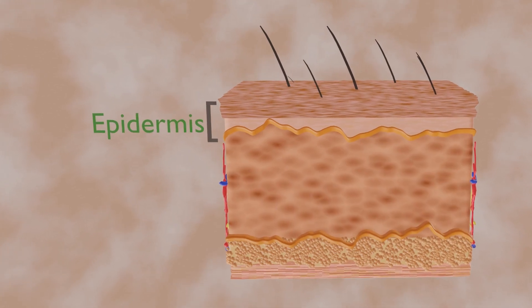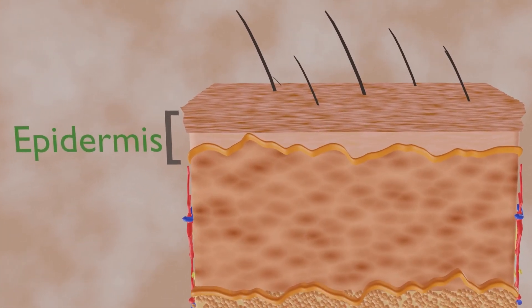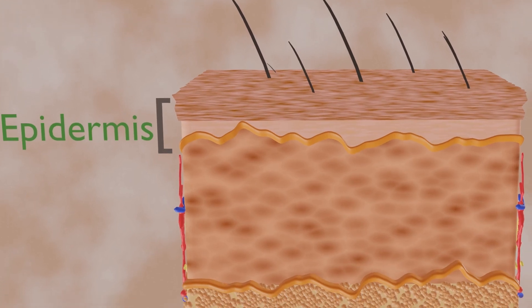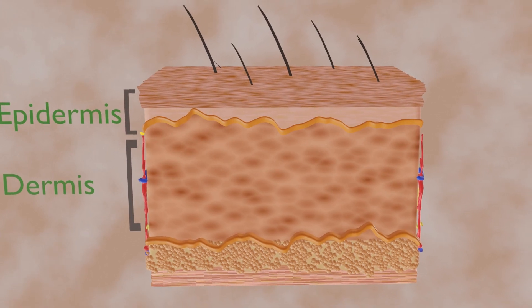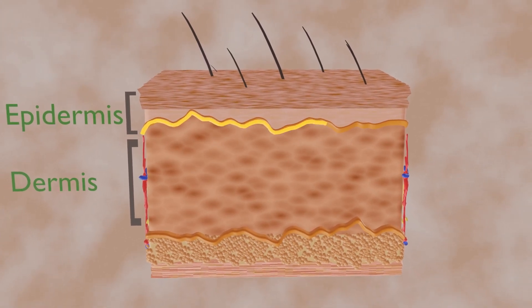The outer layer is called the epidermis. It is a tough protective layer that contains many cells which perform different functions. The second layer, located under the epidermis, is called the dermis. Basement membrane separates the epidermis from dermis.